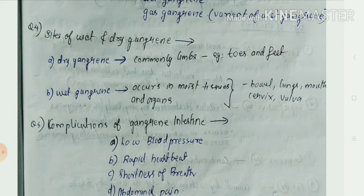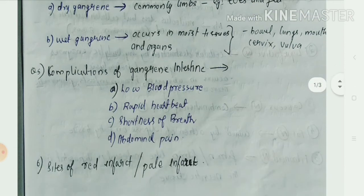The complications of gangrene intestine include low blood pressure, rapid heartbeat, shortness of breath, and abdominal pain. You should also look into the pathogenesis of gangrene.